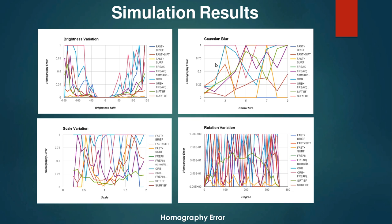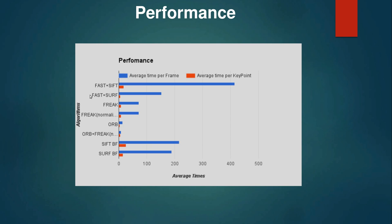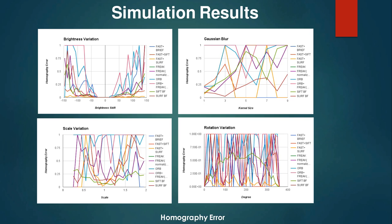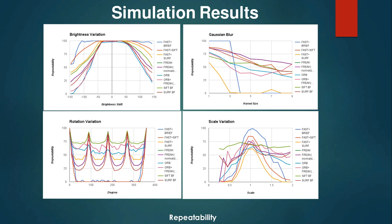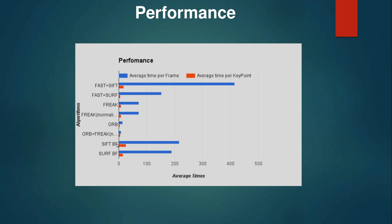Very haphazard and complex results have been obtained for homography error. The overall performance is measured in time — we measure average time per frame and average time per keypoint. FAST and SIFT take the maximum average time per frame, whereas ORB alone and ORB with FREAK take the minimum time. FAST and BRIEF have the best time performance — so low it is not even visible in the graph. For average time per keypoint, FAST and BRIEF are lowest, followed by ORB and ORB with FREAK.